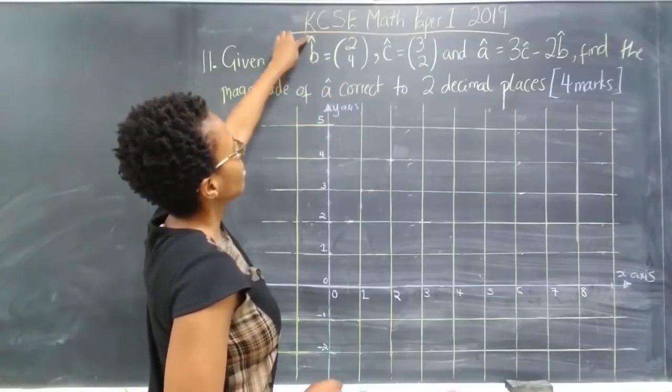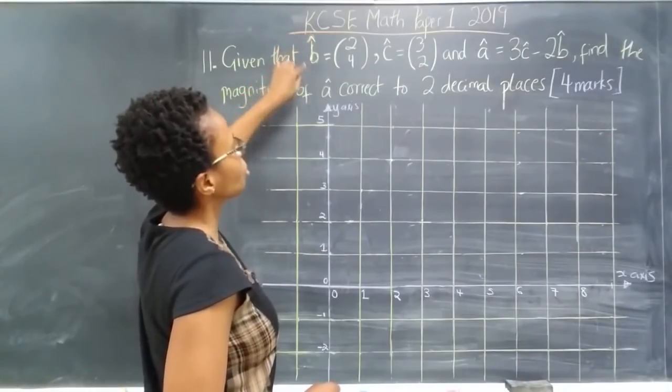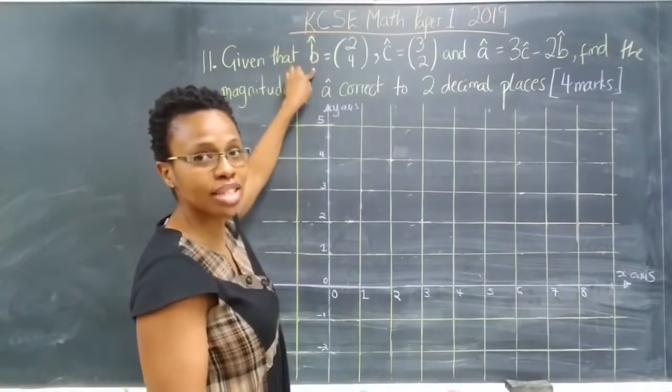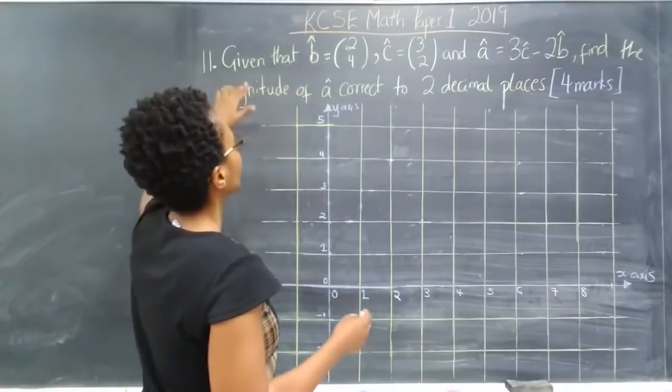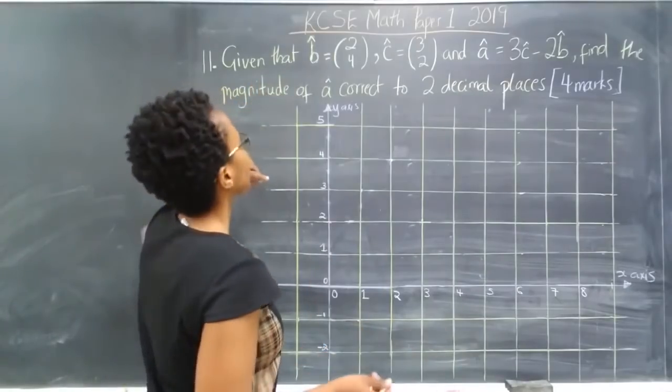I've indicated an arrow sign above b just to show that it's a vector, but in your KCSE paper, this is going to be in bold. On the question paper, this is actually in bold to demonstrate that it's a vector.